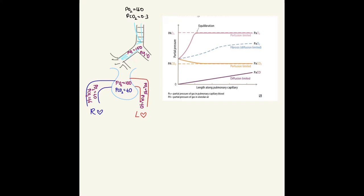The partial pressure of oxygen in the atmosphere is 160. When it comes down to the alveoli, it decreases to 100. The pulmonary capillary which comes to the alveoli for oxygenation initially has a partial pressure of oxygen at 40. When it gets oxygenated, it becomes 95. Carbon dioxide, which was initially 46, decreases to 40.